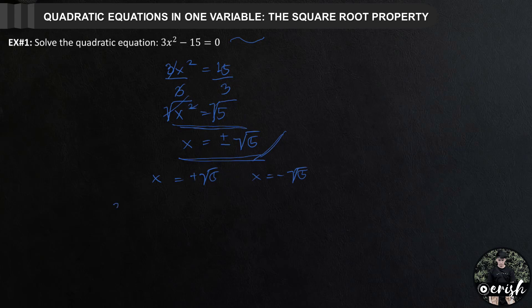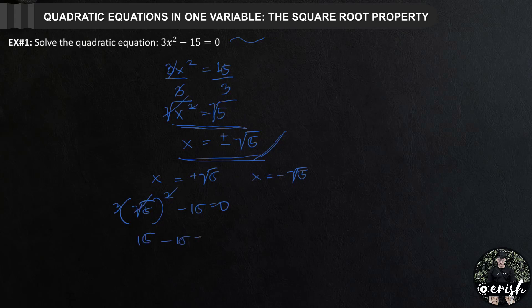Checking x equals positive square root of 5: 3 times the square root of 5 squared minus 15 equals 0. The square root of 5 squared is simply 5, so 3 times 5 is 15 minus 15 equals 0. This is a true statement — one confirmation that our solution is correct.